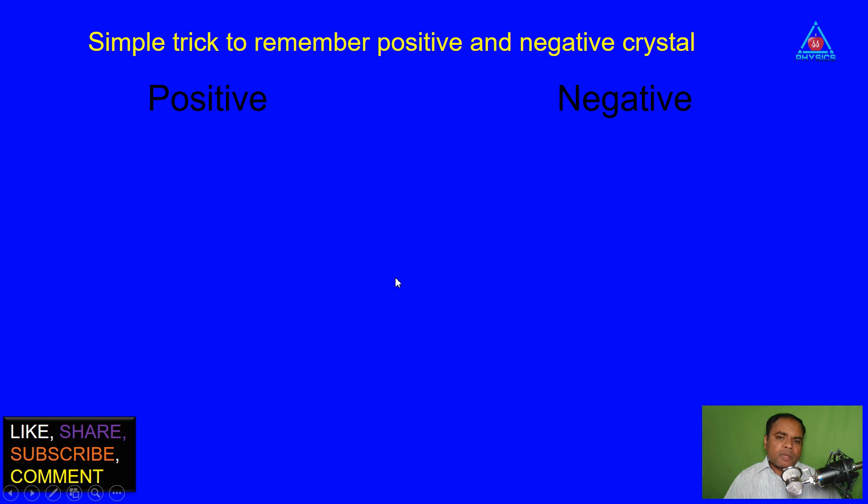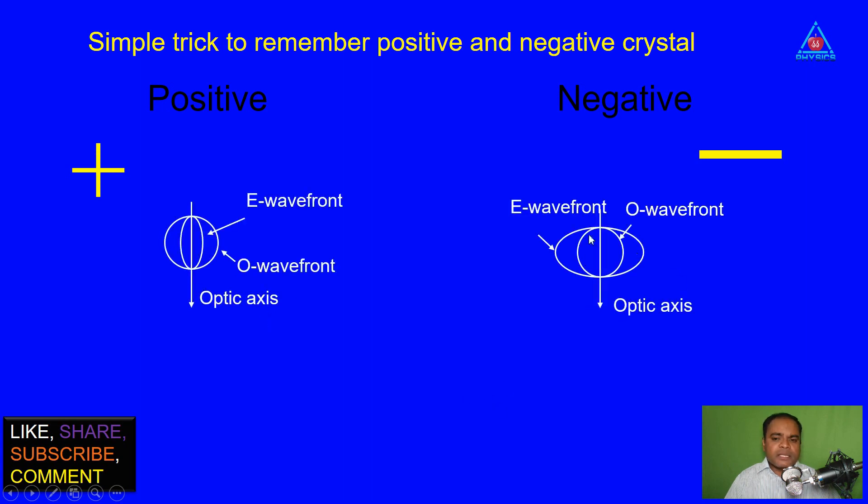Now simple trick to remember positive and negative crystal. So this is a positive sign and this is negative sign. How is the figure for positive crystal wave propagation? It is like this and the figure for negative crystal it is like this. So this positive sign is symmetric similar to this figure. You can see this positive sign fits in this figure. So this is a positive crystal figure.